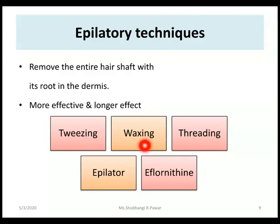The second epilatory technique is waxing. Waxing involves applying warm or cold wax onto the hairy skin and quickly stripping off the wax and hairs against the direction of hair growth. It is the most effective epilatory method since hair is removed in large quantities from a large surface area. Similarly, there is another epilatory technique called sugaring, where instead of wax, a mixture of sugar, lemon juice, and water is used to form a syrup.